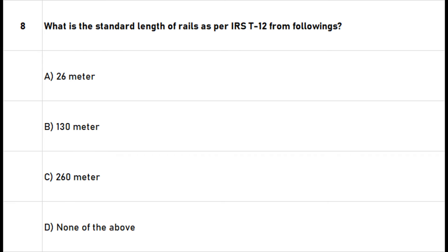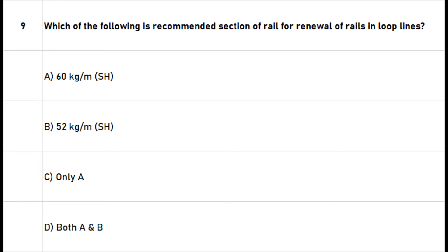Question 8: What is the standard length of rails as per IRST 12? A. 26 meters. B. 130 meters. C. 260 meters. D. None of the above. The right answer is option A: 26 meters. As per IRST 12, 13 meters and 26 meters are the standard lengths of rail.